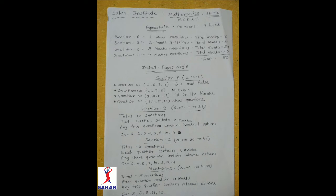You can also see the detailed paper style. In Section A, question number 1 to 16. Question numbers 1, 2, 3, 4 are True and False. Question numbers 5, 6, 7 and 8 are MCQs. Question numbers 9, 10, 11 and 12 are Fill in the Blanks. And question numbers 13, 14, 15 and 16 are short questions — you can give the answer in one sentence or one word.